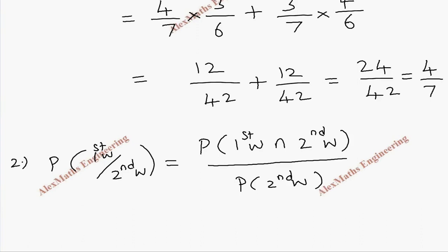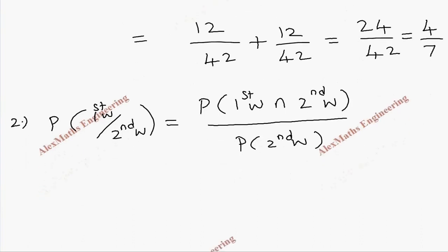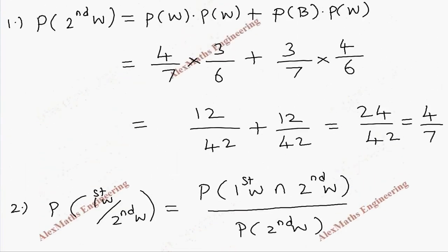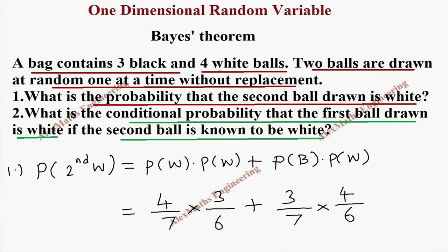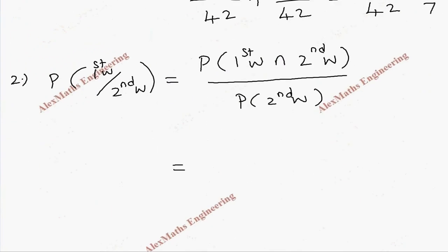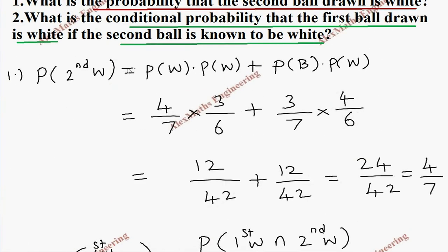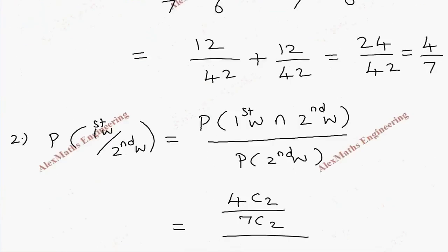The numerator — P(first white ∩ second white) — means both balls are white, chosen from the four white balls. That is 4C2 divided by 7C2. The denominator, P(second white), was already calculated in the first part and equals 4/7.